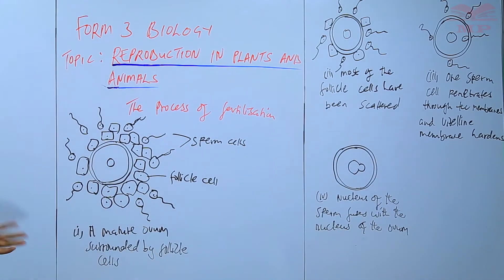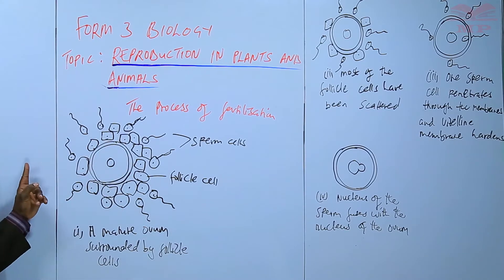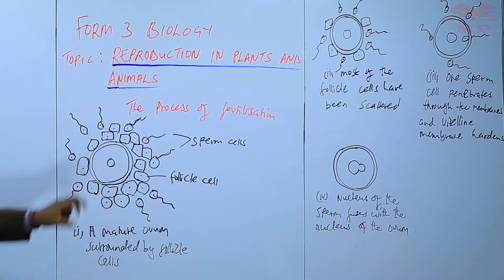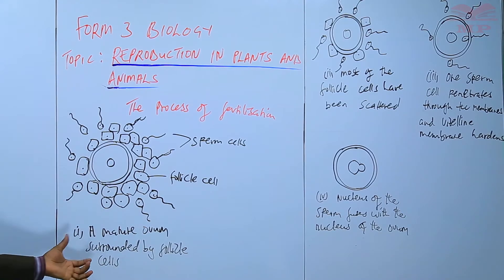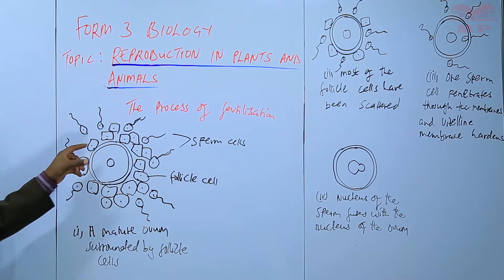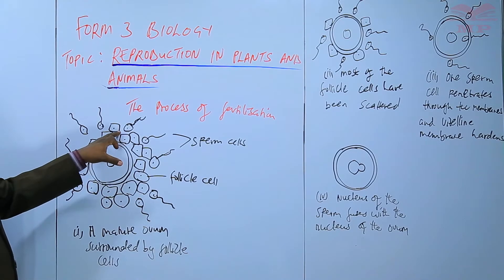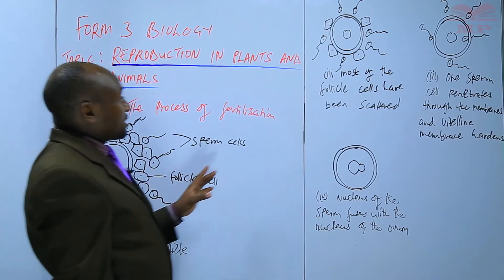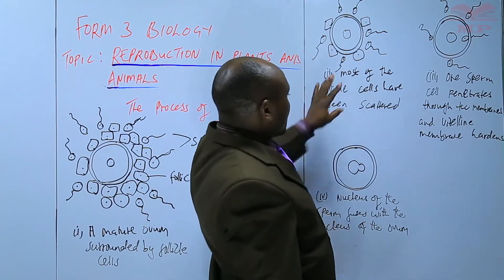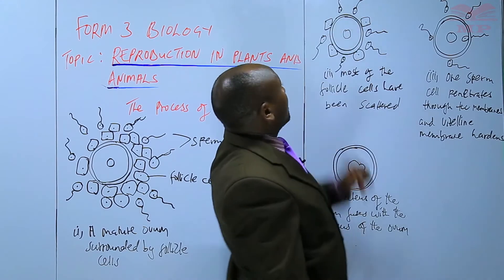The process starts with many follicle cells surrounding the ovum. Then the sperm cells release lytic enzymes that start scattering the follicle cells. In the second diagram, most of the follicle cells have been scattered — only a few remain.